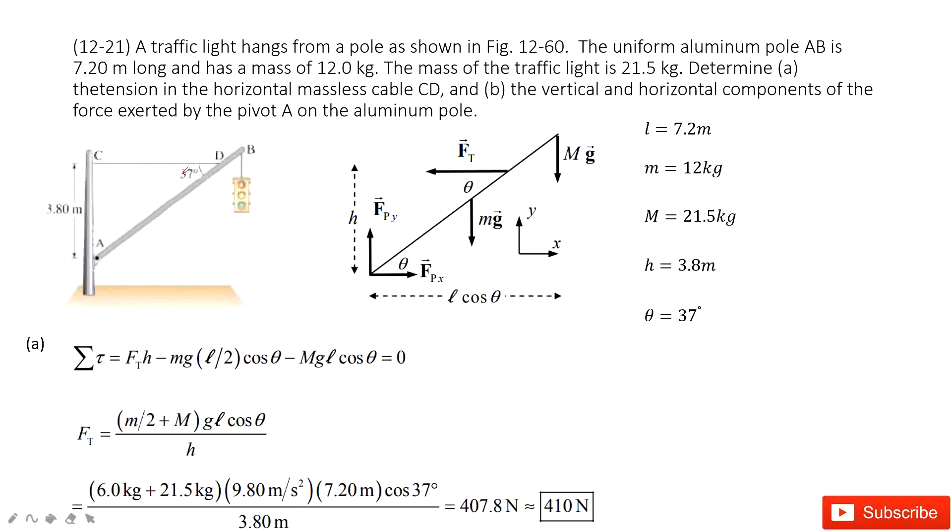Now we look at this system. In this system, we have a traffic light. It hangs from a stick AB. The length of AB is given L. And the mass of this stick is given. The mass for the traffic light is given. And then you can see the distance A to C is given. And angle theta 37 degrees is given.